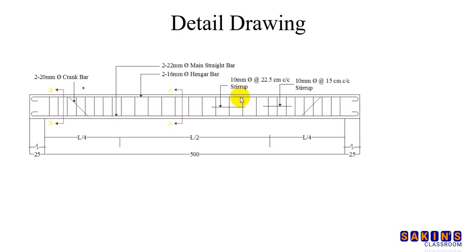First we will see beam detailed drawing. First we will see a long section. We will see total span length, a beam crank bar 20mm, main straight bar, and 16mm hanger bar.